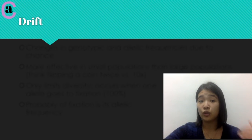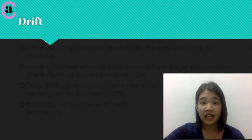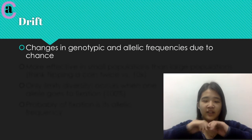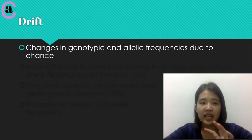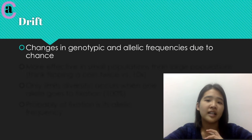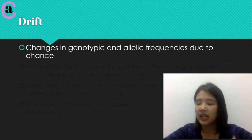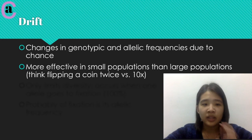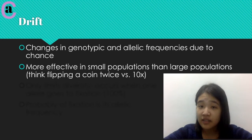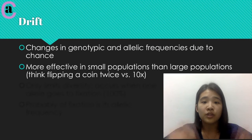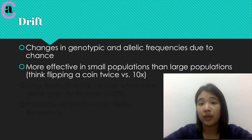So getting more into genetic drift — what exactly is it? Genetic drift is very interesting because it is completely due to chance. There is no other reason that drift actually happens. And because of that, it affects small populations way more than big populations. So here I have the example of flipping a coin.